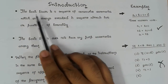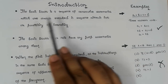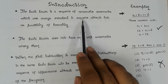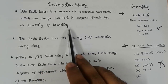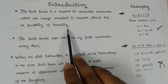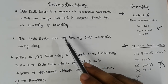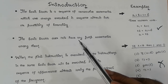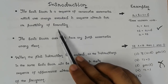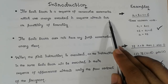A basic block is a sequence of consecutive statements which are always executed in sequence without halt or possibility of branching. Meaning, a basic block is a sequence of statements which is executed and there is no possibility of branching or halt.